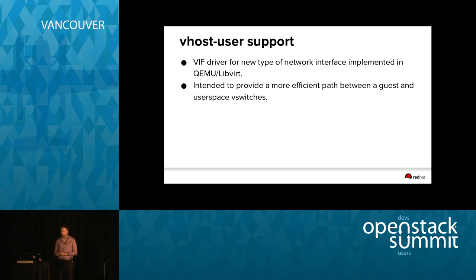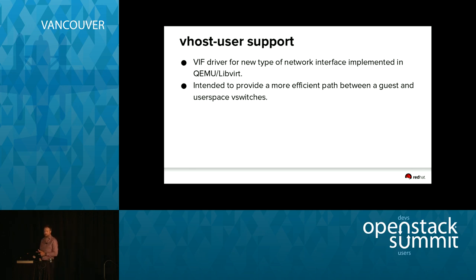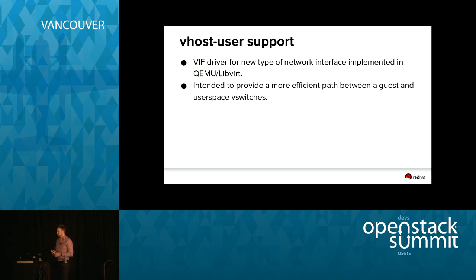Support for vhost-user: vhost-user is a new type of network interface implemented in QEMU and LibVirt, intended to provide a more efficient path between a guest and user-space switches. It becomes particularly interesting not just in normal OVS use cases but as we look at OVS with DPDK acceleration when they combine together. The VIF driver is there at the moment, and I'll talk more about what we need to do around that in the Liberty look-forward.